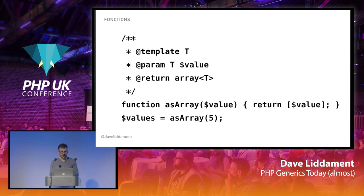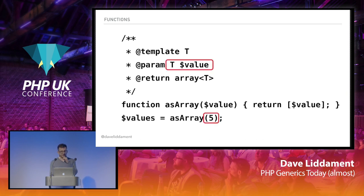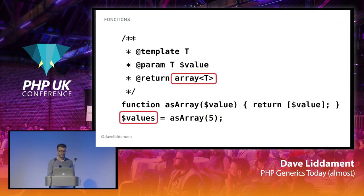A slightly more advanced version — perhaps something with a bit more practical use — is a function called as-array. It takes a value and returns an array of those values. We can see we're passing something of type integer, so we know T will be type int in this case. And since we're returning an array of something of type T, values will be an array of integers.